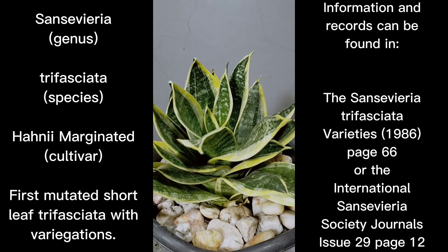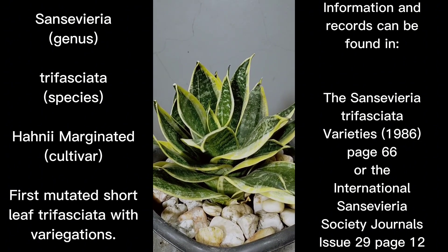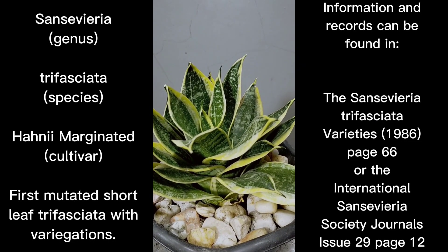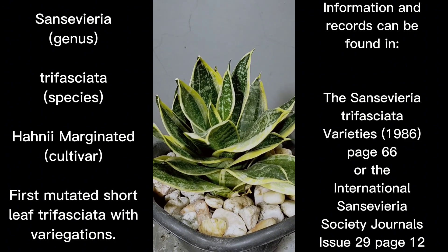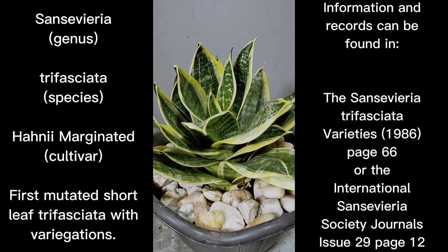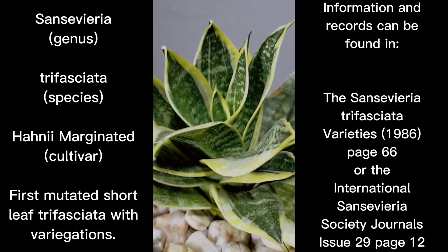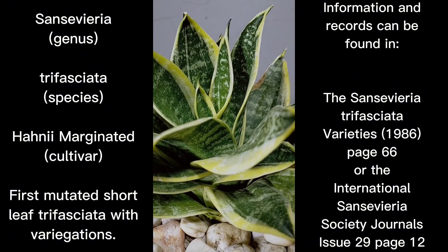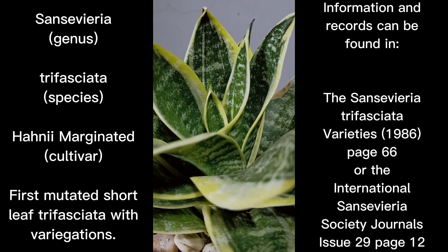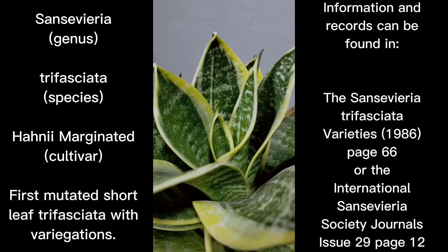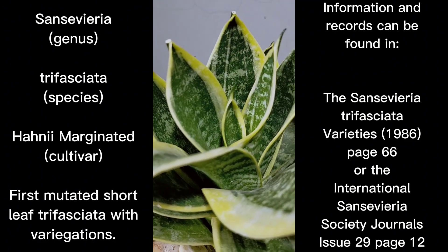This is one of the first variegated types that appeared among the short leaf group. As mentioned, Honey Eye trifasciata is the green form — non-marginated — and the first of the short leaf. The first marginated or variegated type to appear after the non-variegated short leaf trifasciata is this specimen. The only difference from Honey Eye is that it became variegated, with bright yellow variegations appearing on the sides of the leaf as margins.